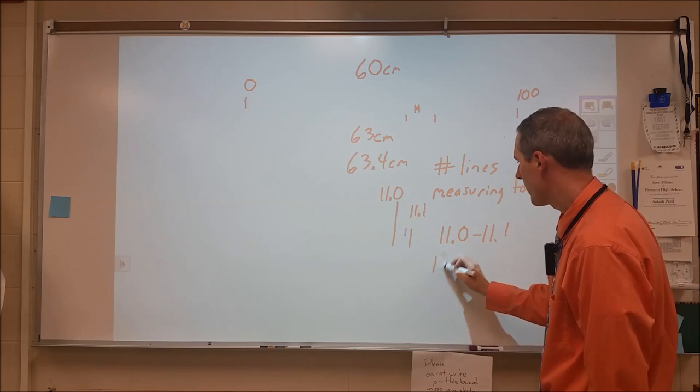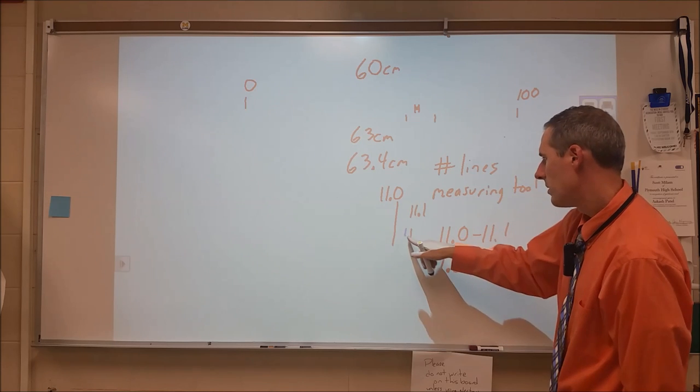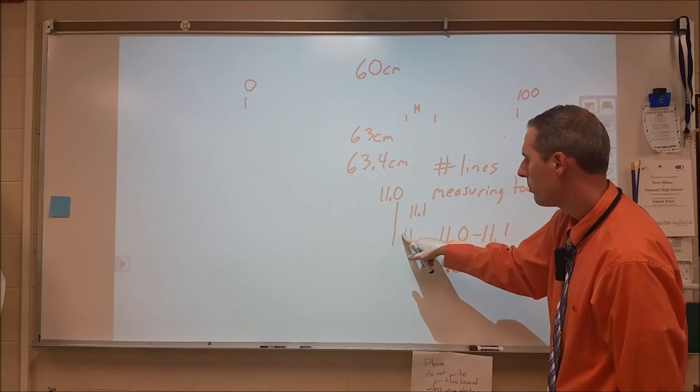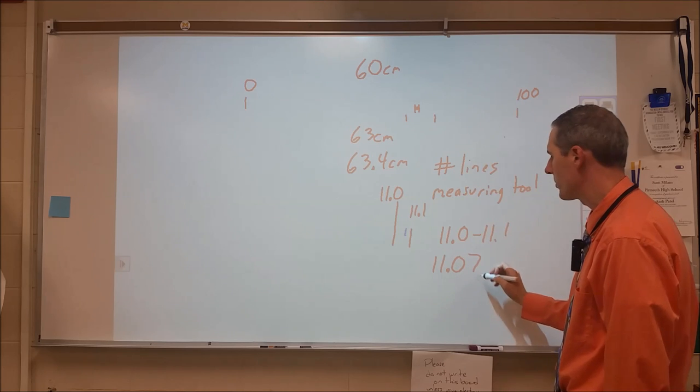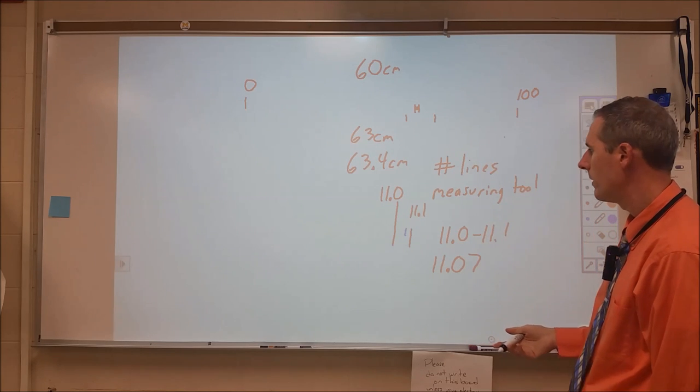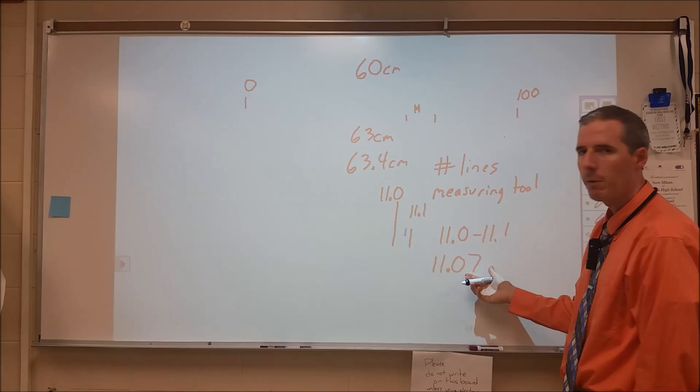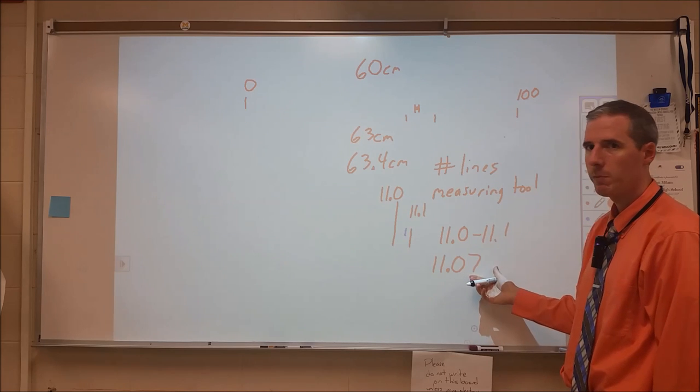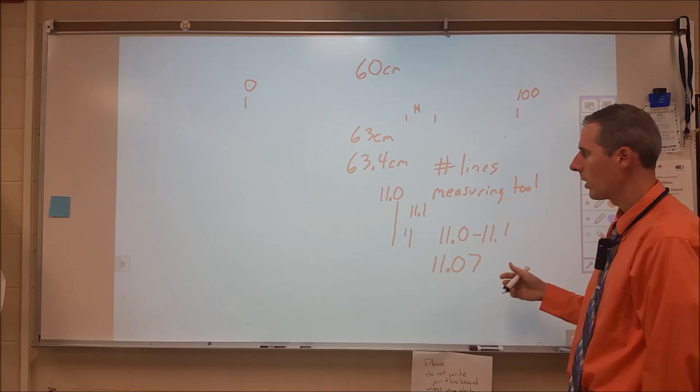So I would write this as eleven point zero something. Now, I think that's more than point five. I would say eleven point zero seven. Eleven point zero six would be fine. Eleven point zero eight would be fine. But I put eleven point zero seven as my measurement, and then I would add the units in.